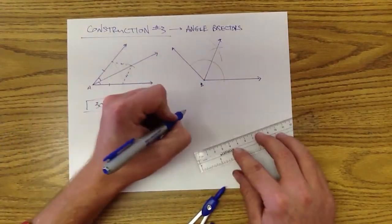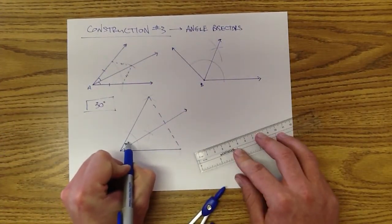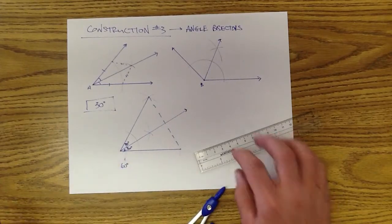Connect that intersection with the vertex of that angle. And you should be able to see or show that this is going to be 30 degrees because we're cutting this in half. This also is going to be 30 degrees. So we've got two 30 degree angles.